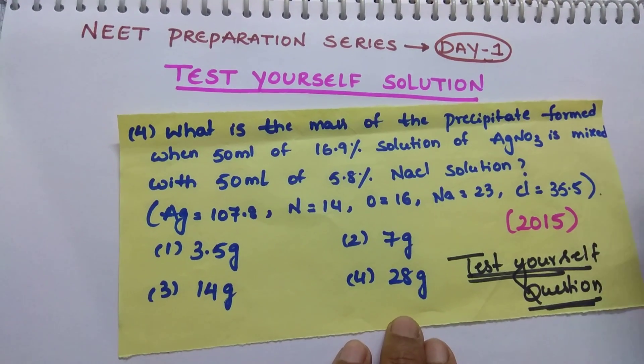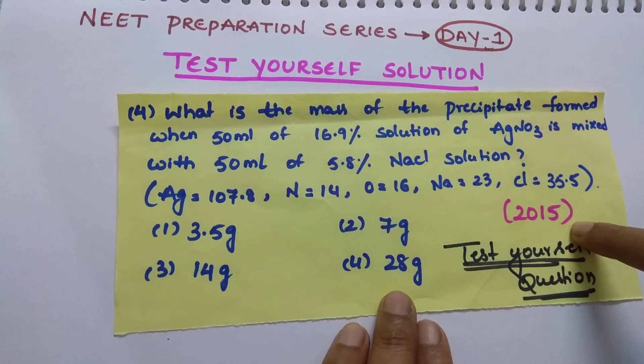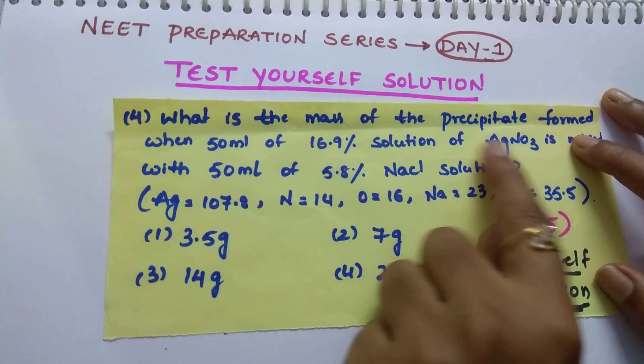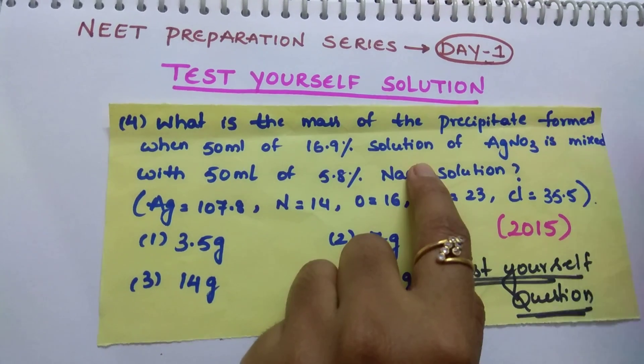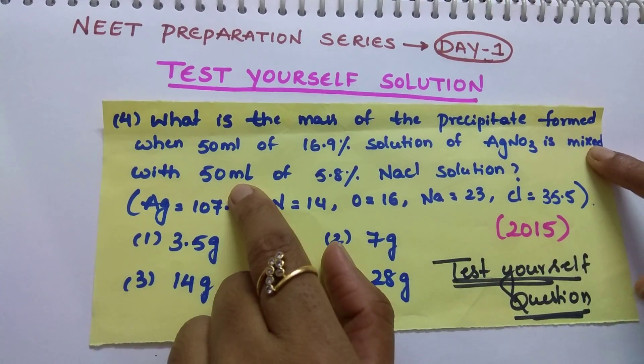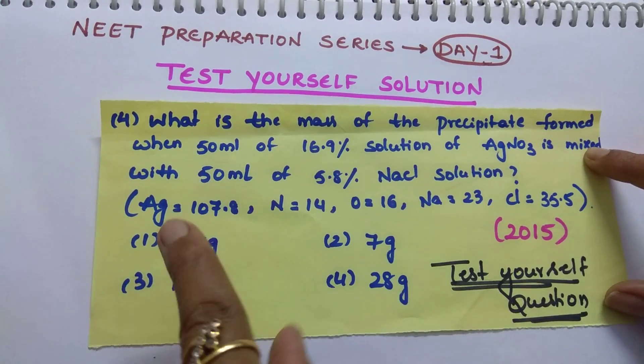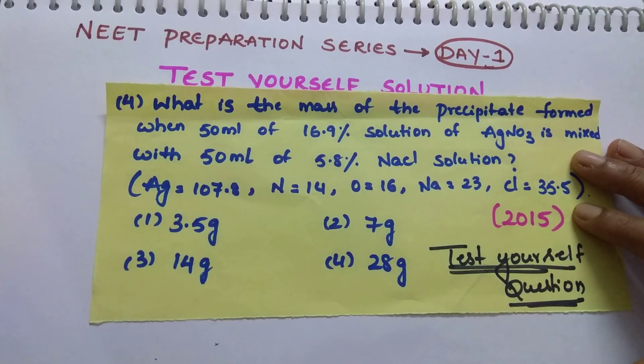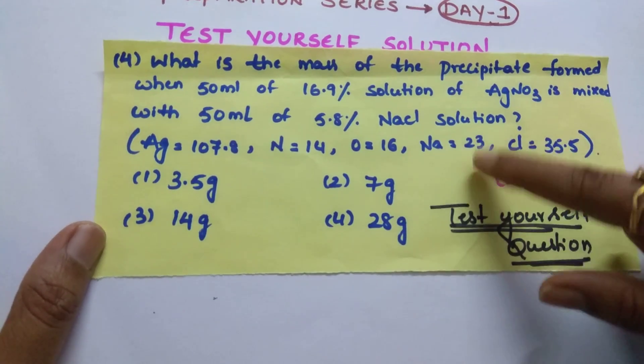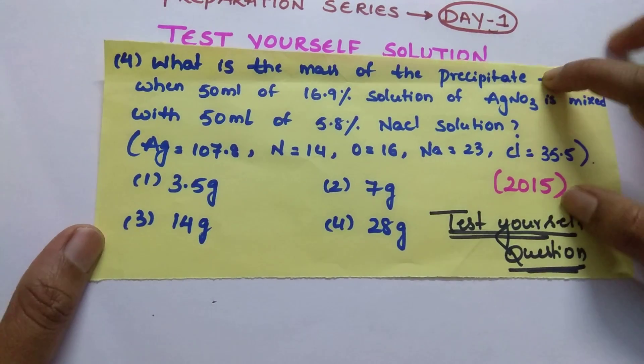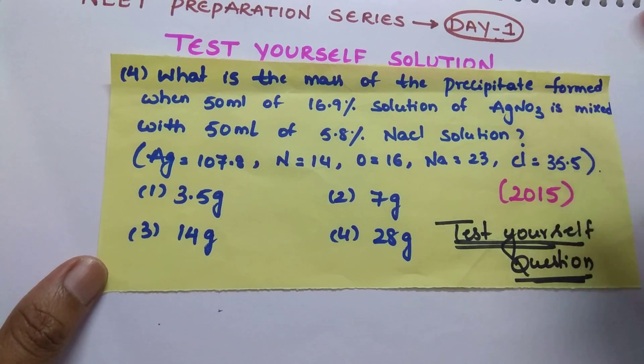This question is from some basic concepts of chemistry chapter and 2015 question. What is the mass of the precipitate formed when 50 ml of 16.9% solution of AgNO3 is mixed with 50 ml of 5.8% NaCl solution? Atomic weight of Ag, nitrogen, oxygen, sodium and NaCl. Whatever you require to solve this question everything is given in the question.